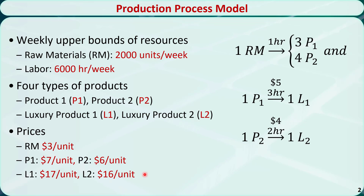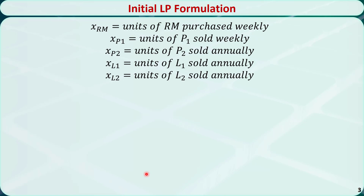The key step for this type of problem is to determine how the outputs from a later stage of the process are related to the outputs from an earlier stage. In order to calculate the profit, we need to know how much raw material should be purchased and how many of each type of product should be sold. Therefore, we define x_RM as the units of raw material processed weekly, x_P1 as the units of product 1 sold weekly, and so on.